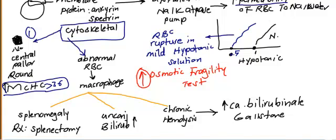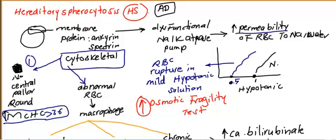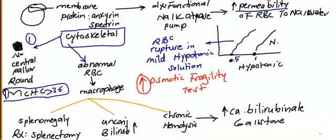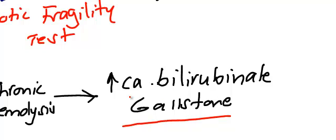Other general features of hereditary spherocytosis: you will see anemia - hemoglobin maybe less than nine or ten - and on blood film you will see reticulocyte count or corrected reticulocyte count more than three percent. To summarize: congenital cytoskeletal membrane abnormality, autosomal dominant - that is hereditary spherocytosis. Consequences include unconjugated bilirubin jaundice, chronic hemolysis with right-sided calcium bilirubinate gallstones, splenomegaly, and treatment is splenectomy.